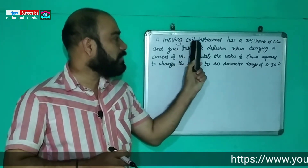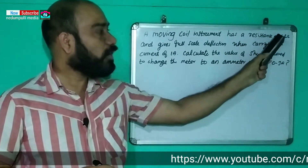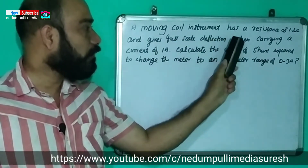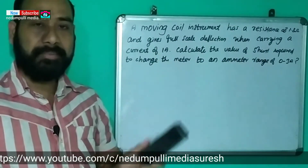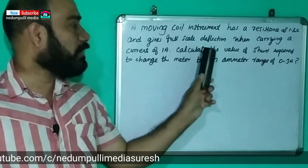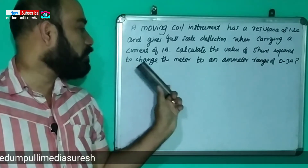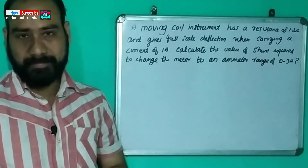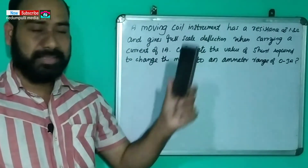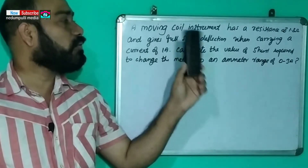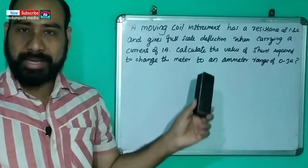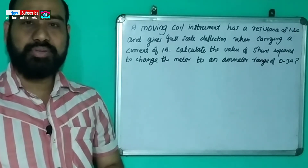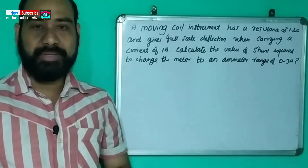A moving coil instrument has a resistance of 1.8 ohms and gives full scale deflection when carrying a current of 1 ampere. Calculate the value of shunt required to change the meter into an ammeter range of 0 to 3 ampere.